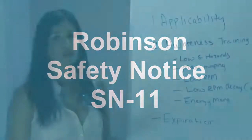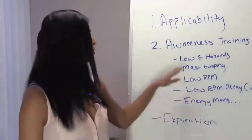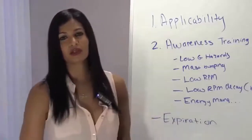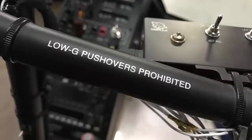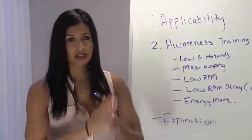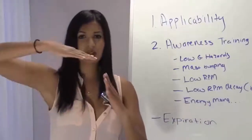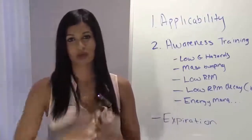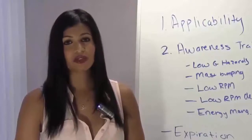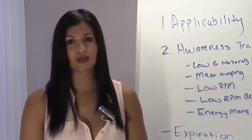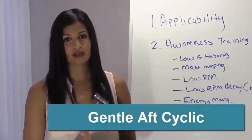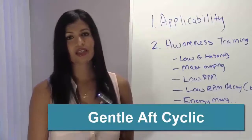As a CFI, what you have to know is it's really easy to get into a low-G hazardous condition. Say you're flying around with your student and all of a sudden a bird flies in front of you — you're going to push the helicopter forward, nose over, and feel yourself come up out of your seat. What's really dangerous is you're going to roll as fast as your tail is above the mass of the helicopter. The higher your tail is, the faster your roll rate is. You instinctively have to train yourself not to correct for that roll first. The keywords are gentle-aft cyclic — gentle-aft cyclic, reload the rotor, and then correct for that roll.